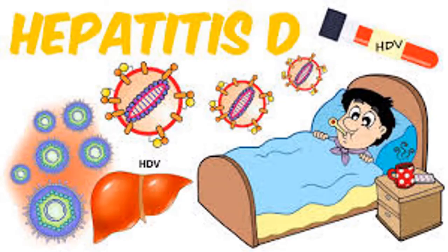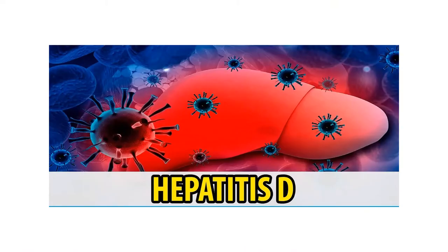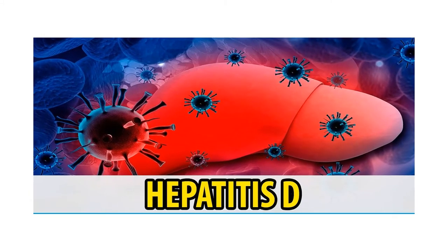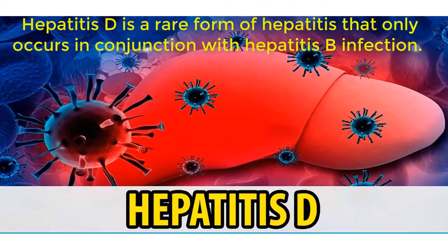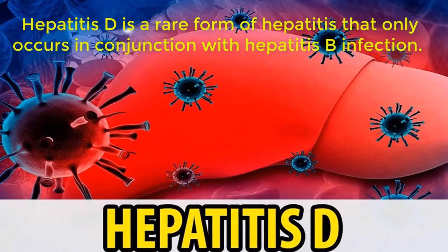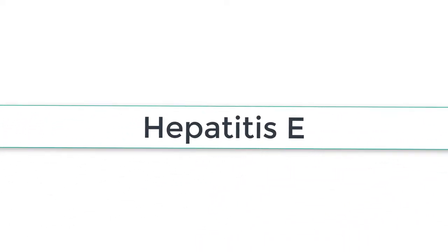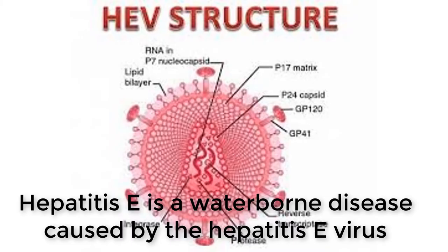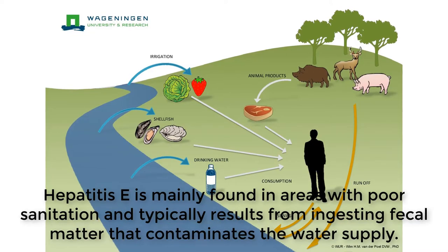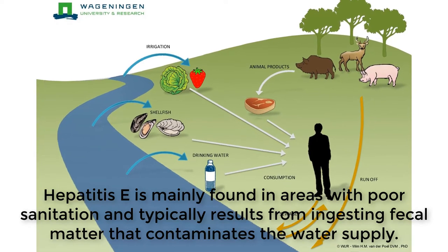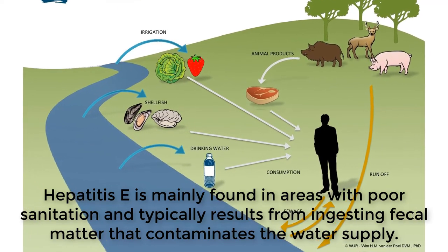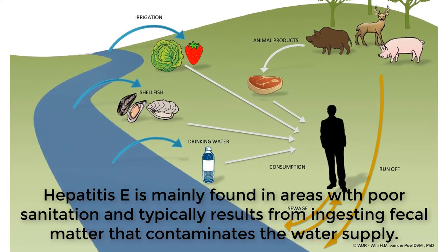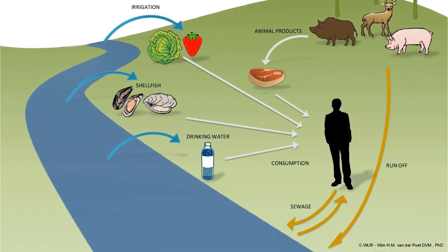Hepatitis D is a rare form of hepatitis that only occurs in conjunction with Hepatitis B infection. Hepatitis E is a water-borne disease caused by the Hepatitis E virus. Hepatitis E is mainly found in areas with poor sanitation and typically results from ingesting fecal matter that contaminates the water supply. This disease is uncommon in the United States.